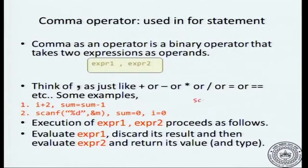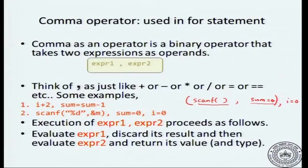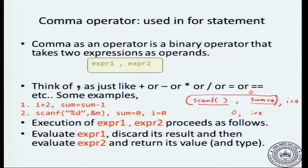This expression will become: scanf and so on, sum equal to 0, i equal to 0. For the first comma, this is expression 1 and this is expression 2, so this expression evaluates to the result of sum equal to 0. At the second level you have 0 comma i equal to 0. The first comma expression is evaluated and its result is the value of expression 2, which is the value of sum equal to 0, which is 0. The outer expression becomes 0 comma i equal to 0, and the value of that is the value of i equal to 0.